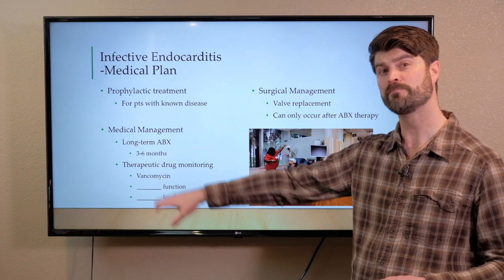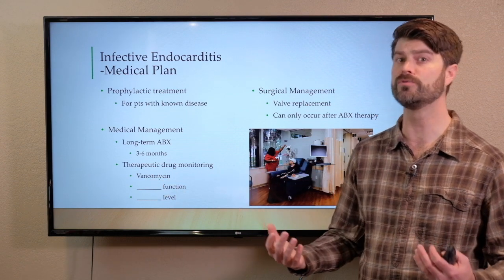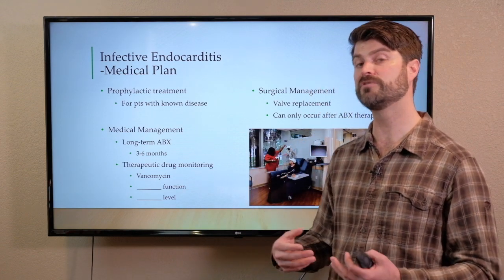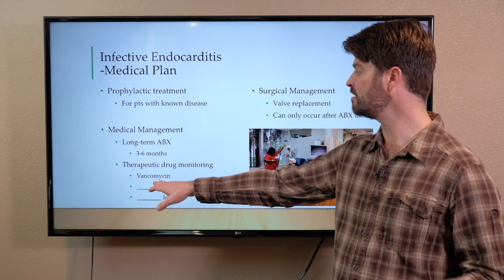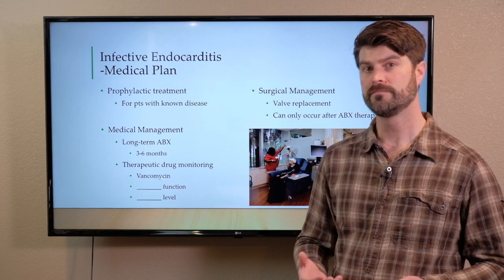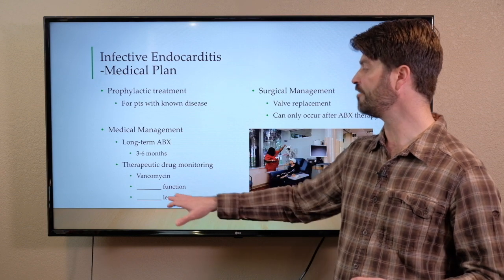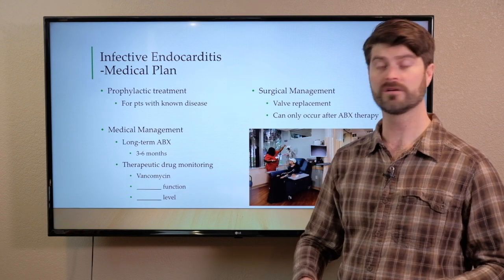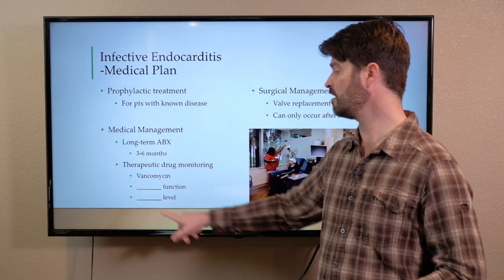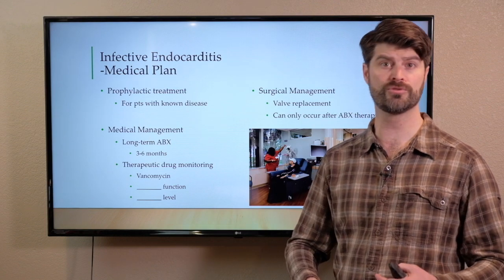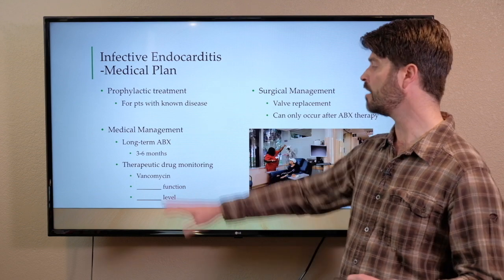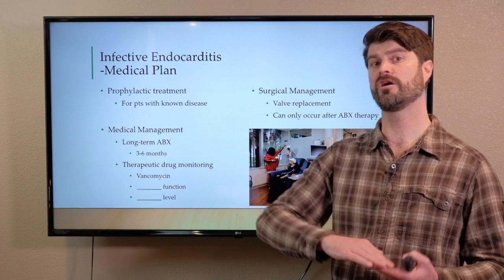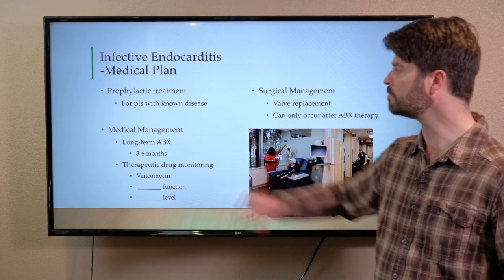One of those being vancomycin — a broad spectrum, very potent antibiotic. With vancomycin, there are a few things we need to monitor because there's a very high risk of toxicity. Vancomycin is a renal metabolite antibiotic, meaning renal function can be impaired if too much antibiotic is given. So we need to monitor renal function and a trough level. We draw a therapeutic trough of vancomycin after every third dose to make sure we're not causing vancomycin toxicity.